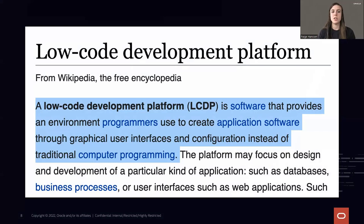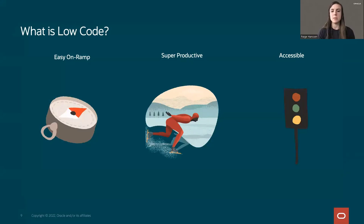With traditional programming, you're writing a lot of code. With low code, you can use an environment to create applications using a graphical UI with wizards, drag and drop, and setting options to build your app. A low code development platform is software that provides programmers with that graphical UI. It's really easy to get started, super productive, and accessible — meaning anyone can use low code to build applications without being an expert or writing a ton of code.